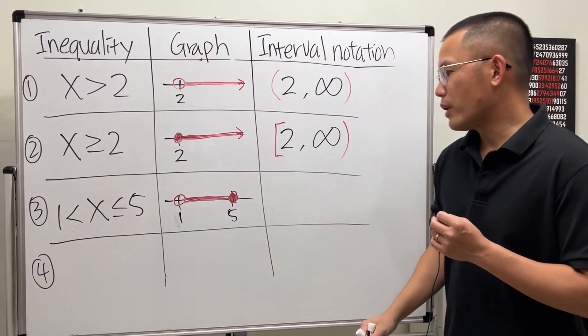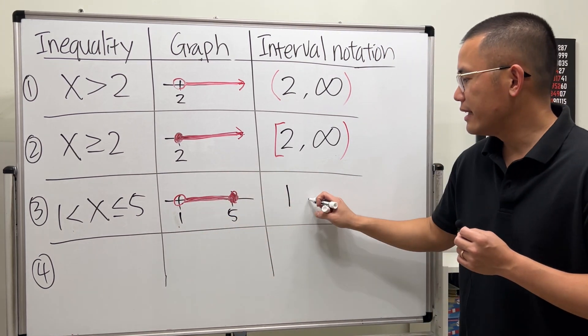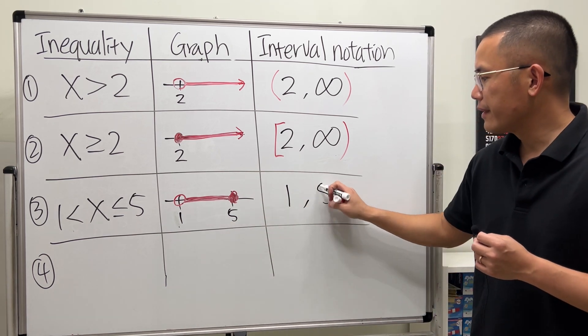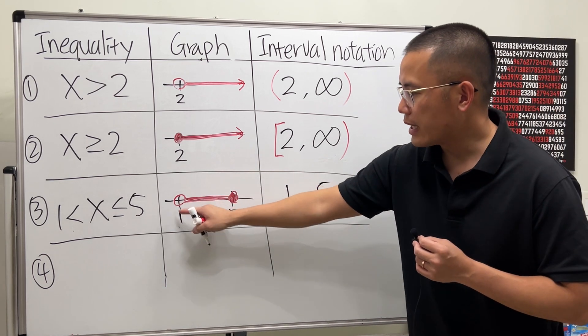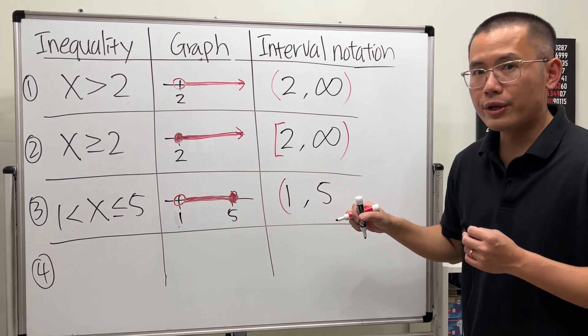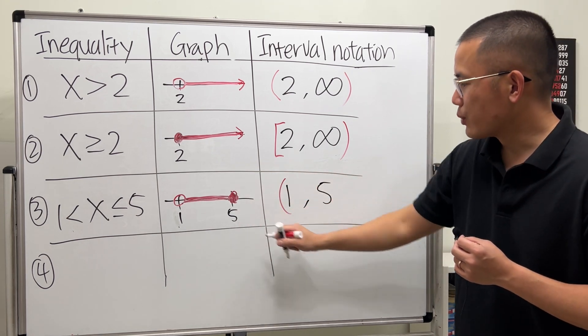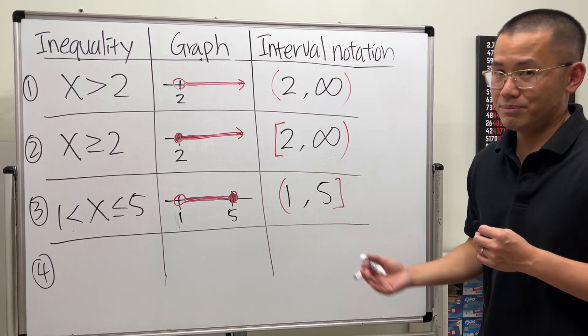Now, for this one though, the left-hand point is 1, and then the right-hand point is 5. Now the 1 is not included, so open parentheses. But the 5 is included, so square bracket, just like this.